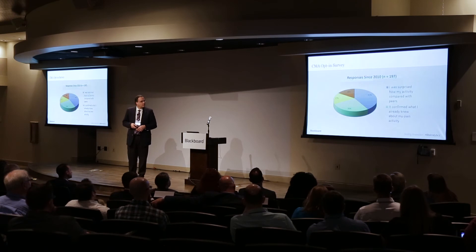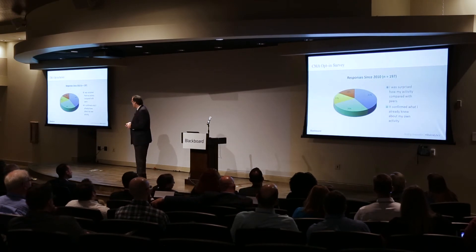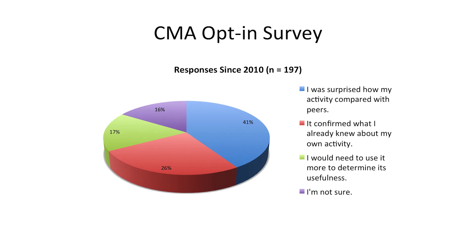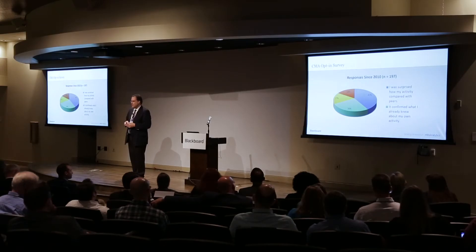So this is what we have learned about how students respond. In an opt-in survey, 41% of our students who used Check My Activity said they were surprised by what it showed them. Another 26% said that it confirmed what they already knew. But there were a couple of groups that were still on the fence. I took that as success — we are at least getting on their radar and raising their awareness.